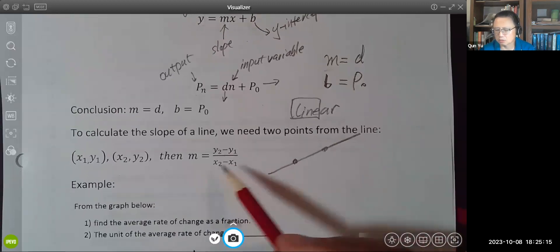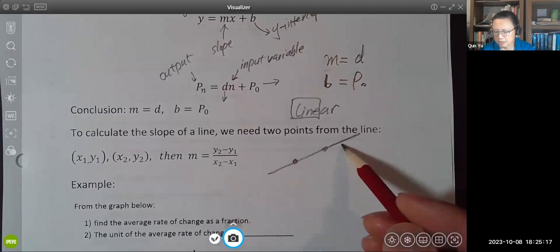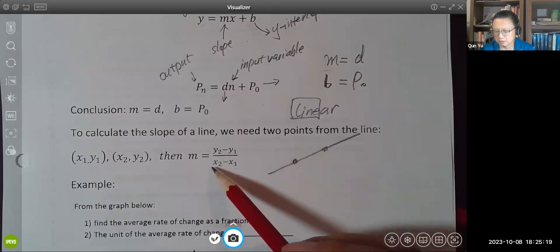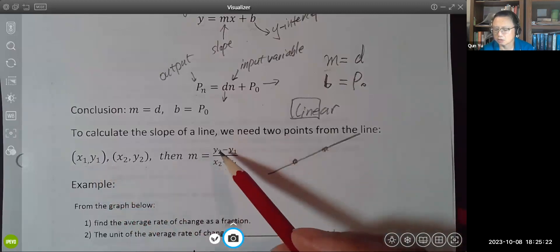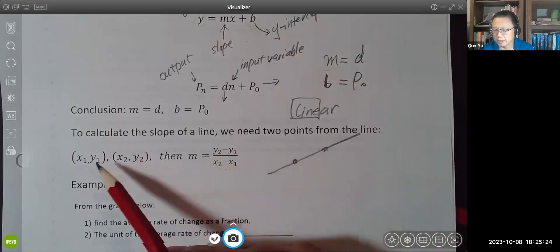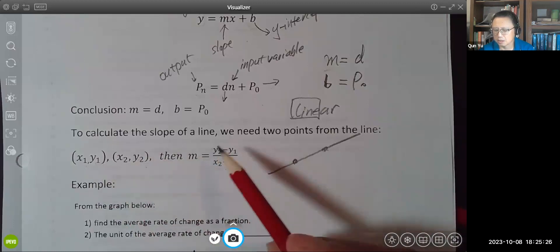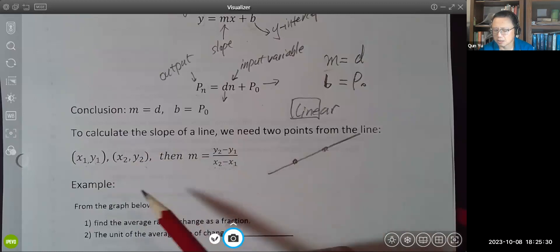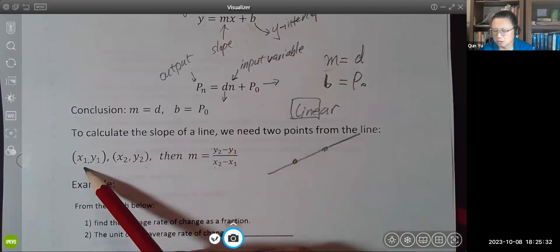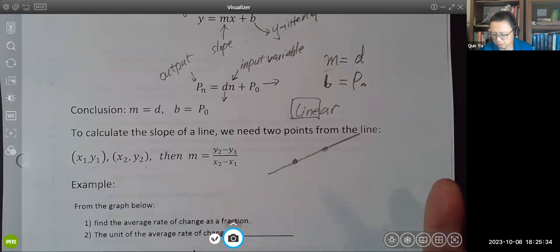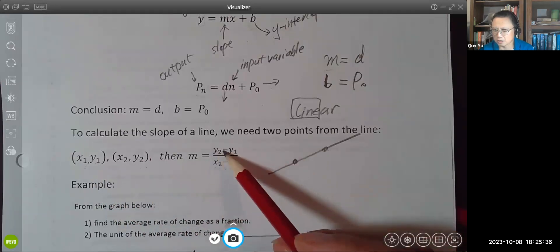And the formula to calculate the slope of a line from these two points is this. So these are two points. You're going to use y-value minus y-value put it on the top, x-value minus x-value and put it on the bottom. Again, x represents input, y represents output. In other words, output minus output divided by input minus input.